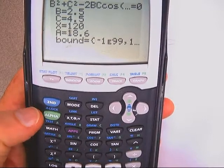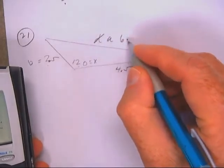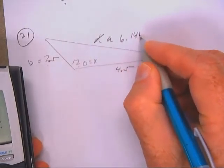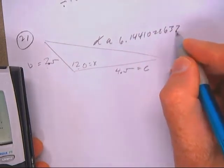Solve for the side opposite from the angle. Six point one four four one zero two eight six three seven. Then we're done.